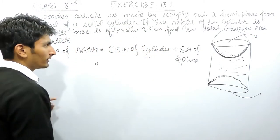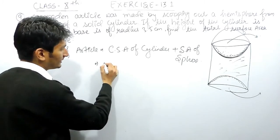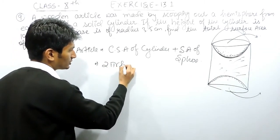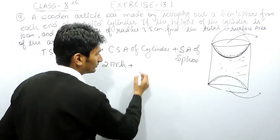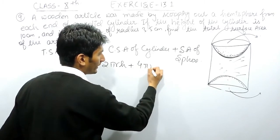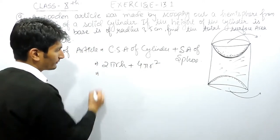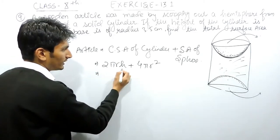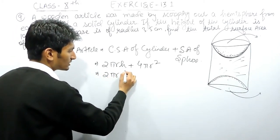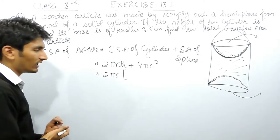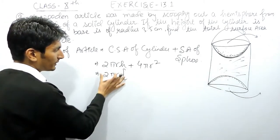So, now what are the formulas to find out the surface area? The curved surface area of the cylinder is 2πrh plus the surface area of the sphere is 4πr². You already know these formulas. Now, we have to solve this. First of all, take 2πr as common. That will make your calculation a bit easy.